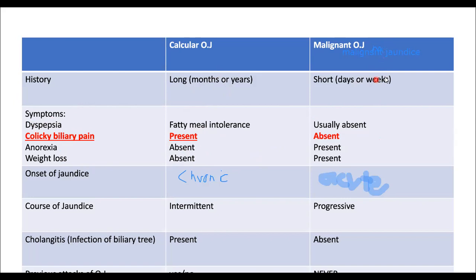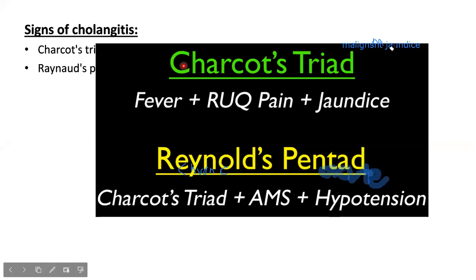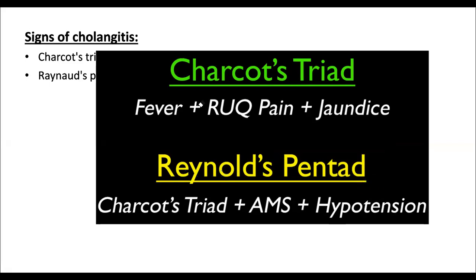Cholangitis signs: Charcot's triad — chills and fever, right hypochondrial pain, jaundice. Reynolds' pentad — Charcot's triad plus hypotension and altered mental status (shock). Courvoisier's law: palpable gallbladder in a jaundiced patient indicates carcinoma of the head of the pancreas until proven otherwise. Exceptions: previous cholecystectomy, chronic calcular cholecystitis (fibrosed thickened wall won't distend), previous ERCP stenting, and Klatskin tumor (cholangiocarcinoma at the porta hepatis — obstruction is above the gallbladder level so it won't distend).